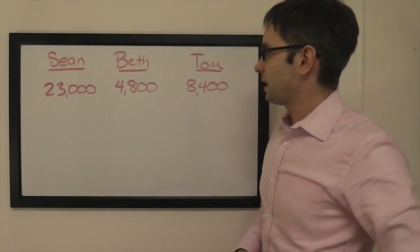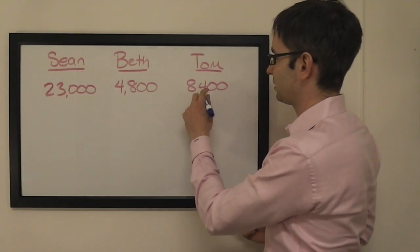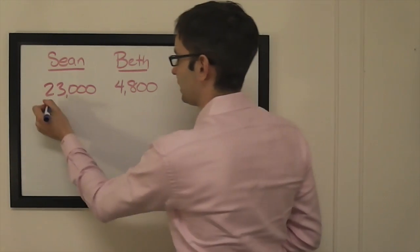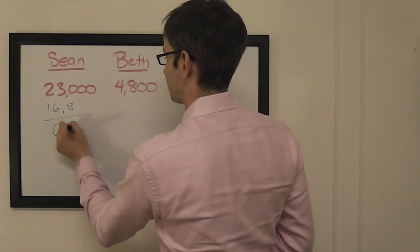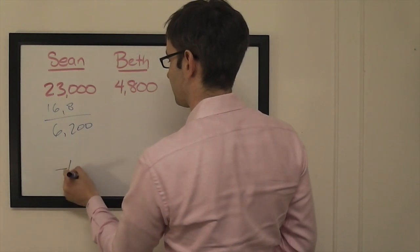Pretty easy calculation for him tonight. If Tom doubles up, we'll have 16.8, so that's a little bit more than 6,000, so it's 61.99 for him.